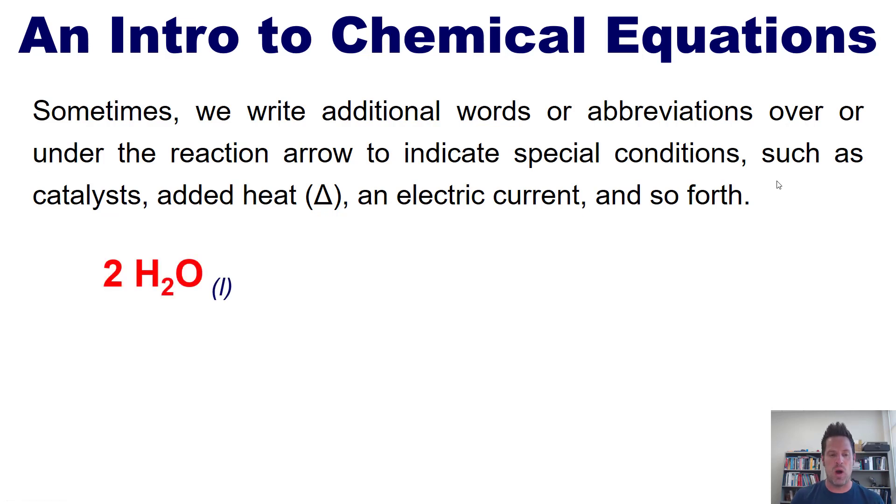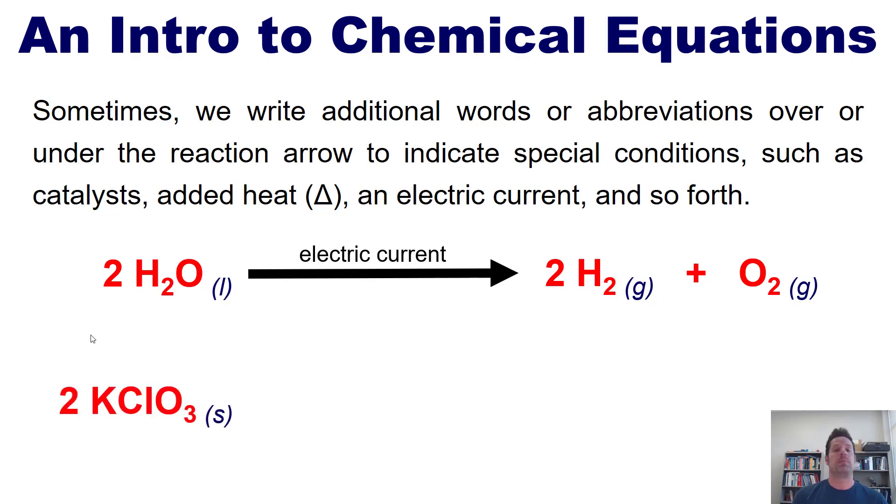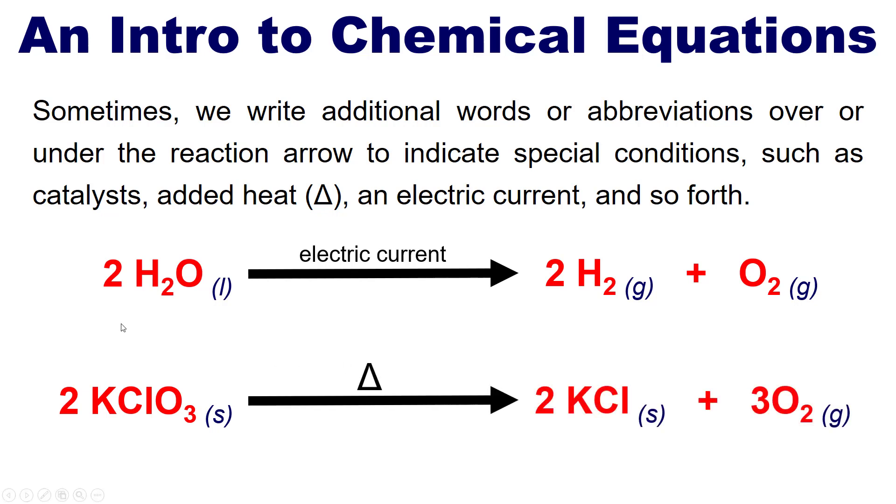For instance, you can actually reverse the reaction of H2O. In other words, you can take H2O molecules, apply an electric current, and get them to reverse back to hydrogen and oxygen gases. So we might write electric current over the reaction arrow to tell the reader that this reaction requires that extra special kick, that electric current. Alternatively, we could do this reaction, potassium chloride solid being treated with heat, indicated with a triangle to separate out into potassium chloride and oxygen or O2 gas.